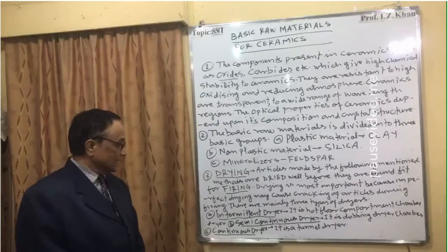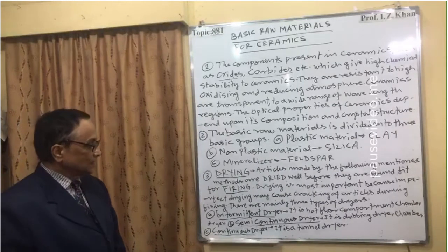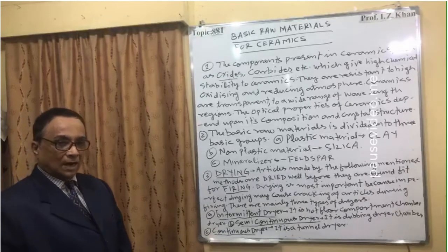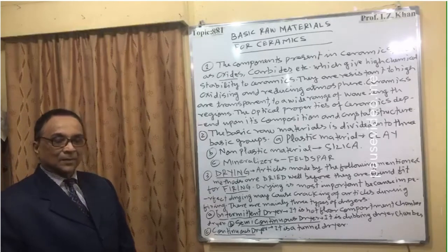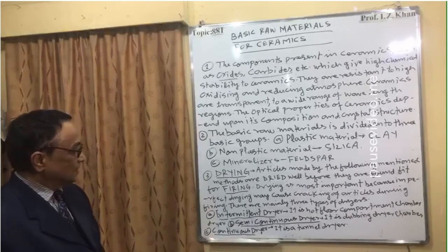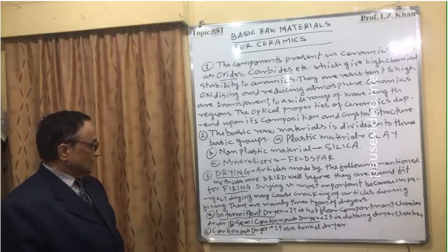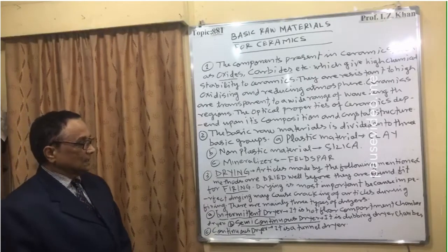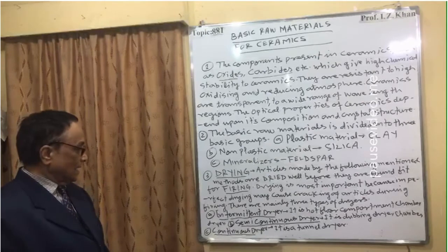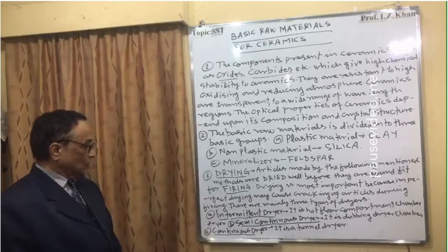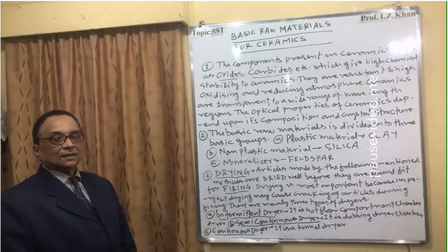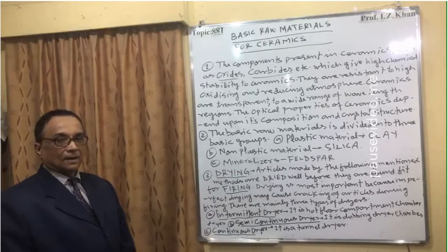There are mainly three types of dryers widely used. Type A is the intermittent dryer — a hot floor compartment chamber. Type B is the semi-continuous dryer — a tunnel chamber. Type C is the continuous dryer — also a tunnel dryer. These three types are used to dry the ceramic particles.